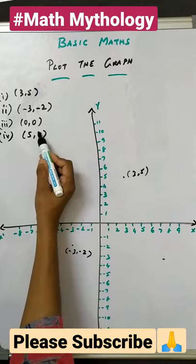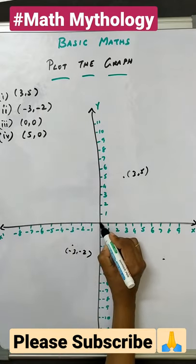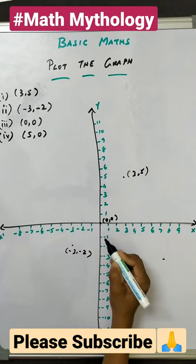The next value is 0 comma 0. So 0 comma 0 is the intersection point of both x and y axis, which is the center point. This is the origin.